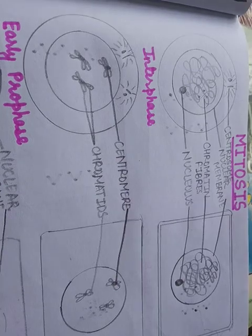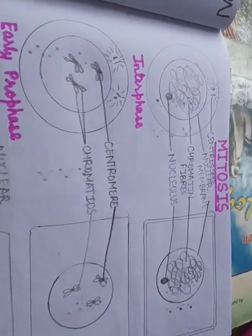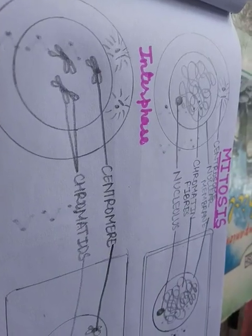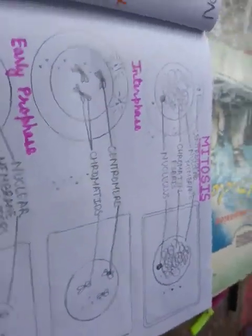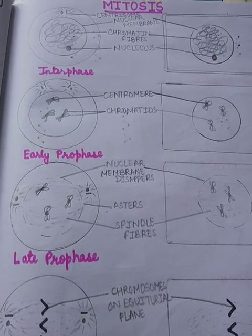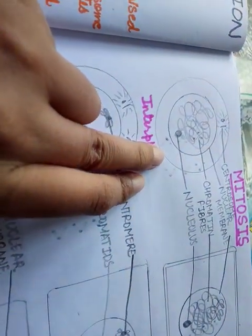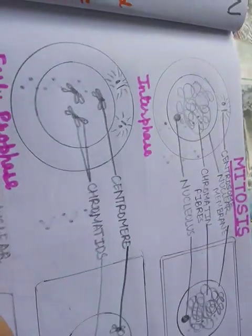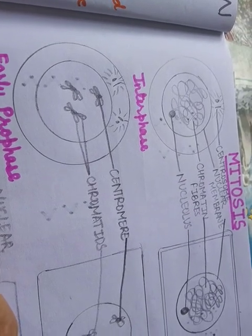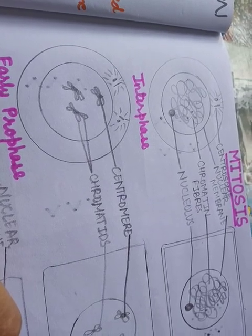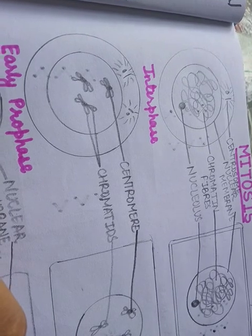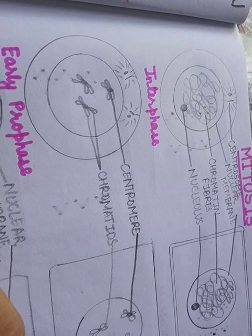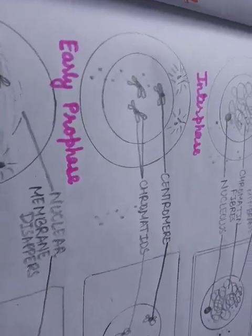We will start with interphase. Interphase is also known as the resting phase. I have shown here both the animal cell and the plant cell with different phases of mitosis. In the interphase, I have drawn the centromere which initiates cell division. You can also see the nuclear membrane, chromatin fiber, and nucleolus. Mitosis and meiosis both occur in the nucleus of the cell, so we will first talk about karyokinesis, which is the division of the nucleus.